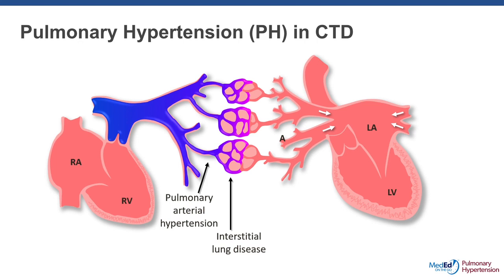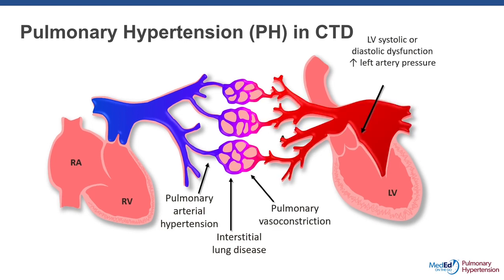Systemic sclerosis can also manifest with interstitial lung disease and pulmonary fibrosis complicated by pulmonary hypertension, which is more of a WHO Group 3 phenotype. And as many of us know, these patients can be hypercoagulable and develop blood clots and chronic thrombosis, giving the patient more of a Group 4 phenotype. So the important thing with connective tissue disease is that while it certainly is a cause of PAH — Group 1 disease — its heterogeneity allows it to manifest in just about any WHO group fashion in the cardiopulmonary circuit.